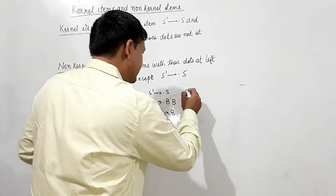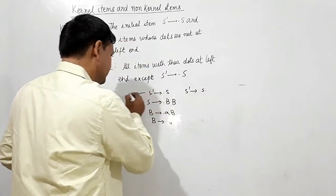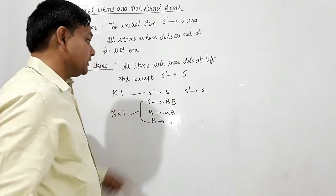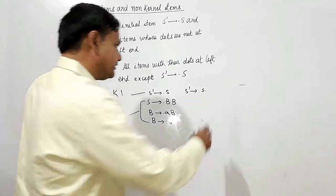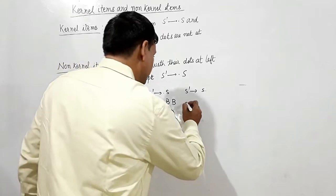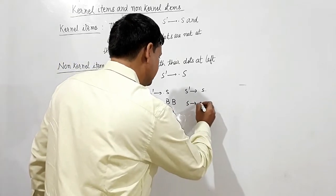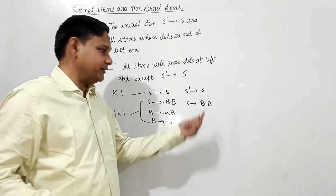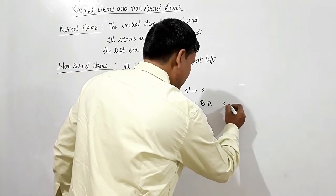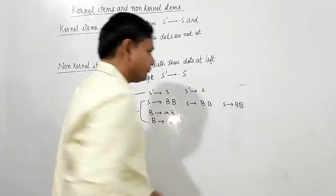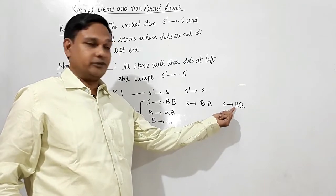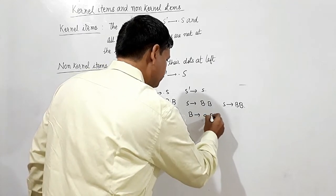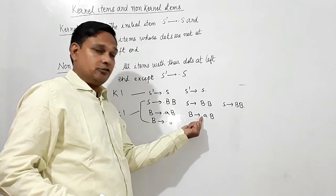If I read S here, S-dash reaches S dot. So I am writing here kernel item — these other items are non-kernel items. If S-dash is giving S dot, this is a kernel item according to the definition. Now if I read B, S gives B dot V, because the dot is not immediately after the arrow. So this is a kernel item. If I read a here, B will give a dot B. It is not immediately after the arrow, so this is a kernel item.